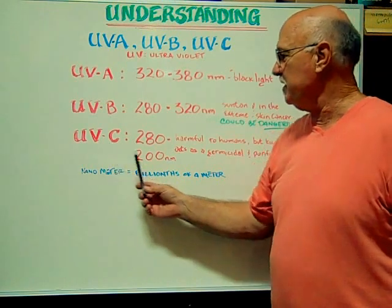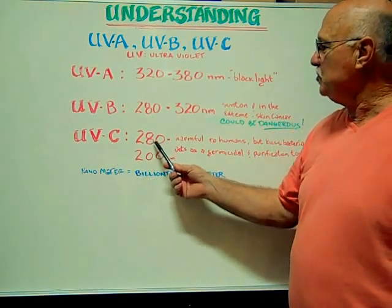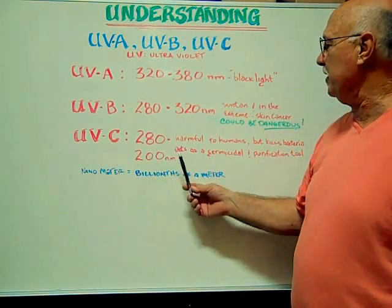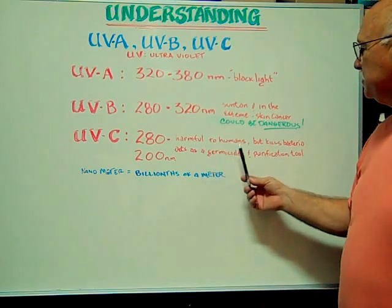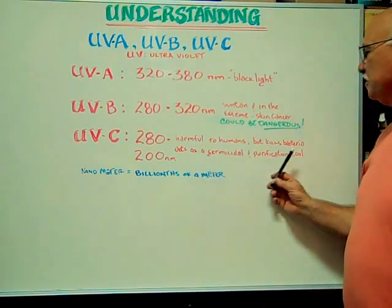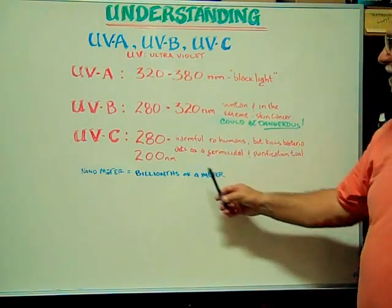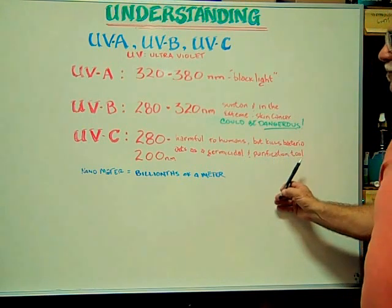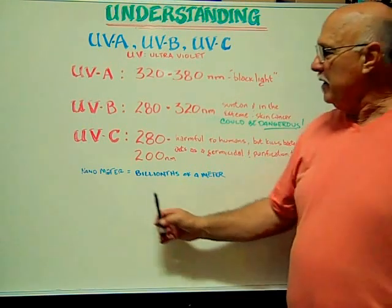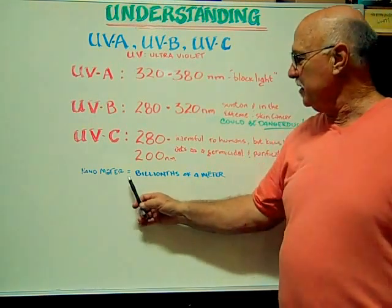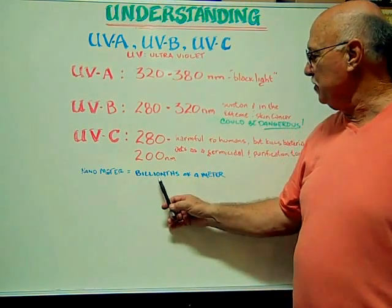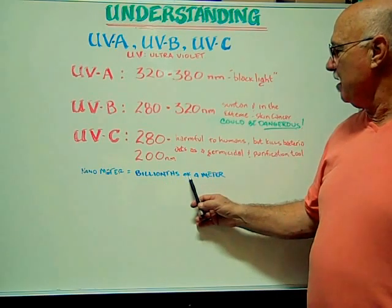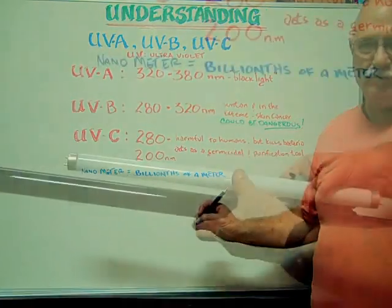UVC is in the spectrum of 200 to 280 nanometers. This is harmful to humans, but it kills bacteria and acts as a germicidal and purification tool. A nanometer is equal to one billionth of a meter.